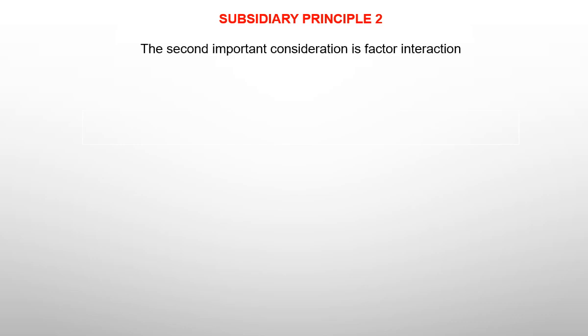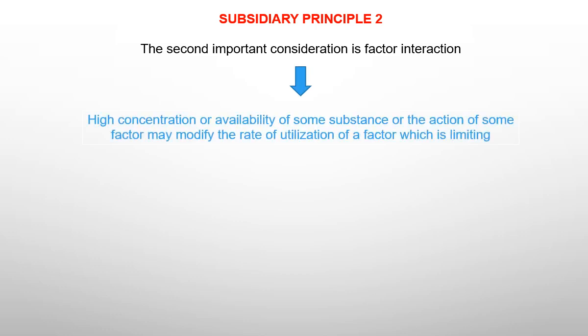The second subsidiary principle is factor interaction. High concentration or availability of some substance or the action of some factor may modify the rate of utilization of a limiting factor. Sometimes organisms can substitute a chemically closely related substance for one that is deficient. For example, some plants have been shown to require less zinc when growing in shade than in full sunlight. Therefore, a low concentration of zinc in soil would be less likely to be limiting to plants in shade than to plants in full sunlight.